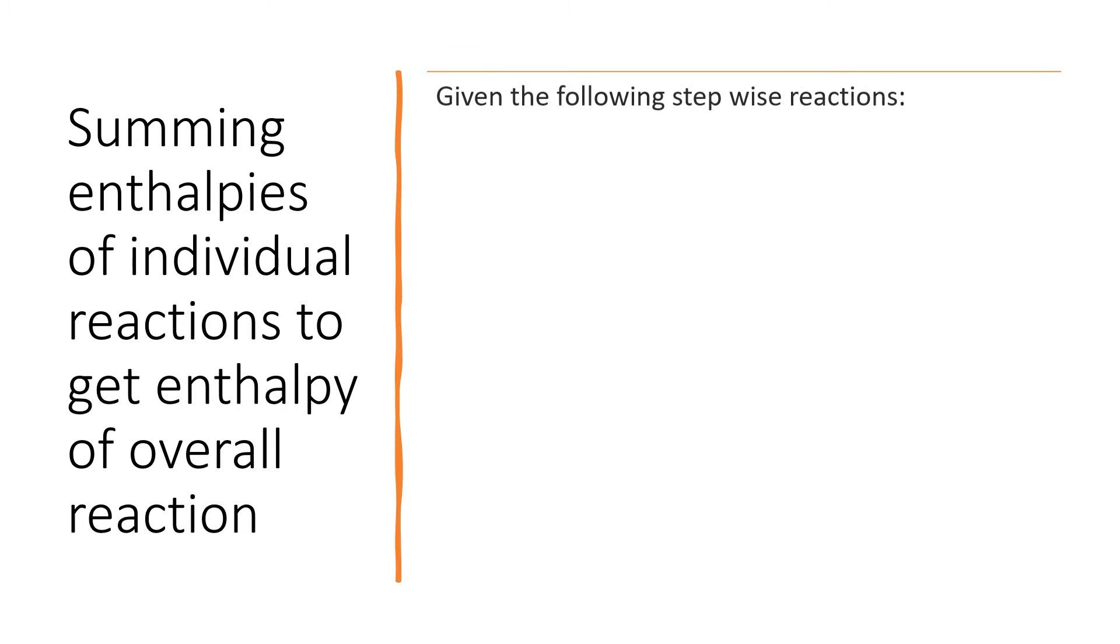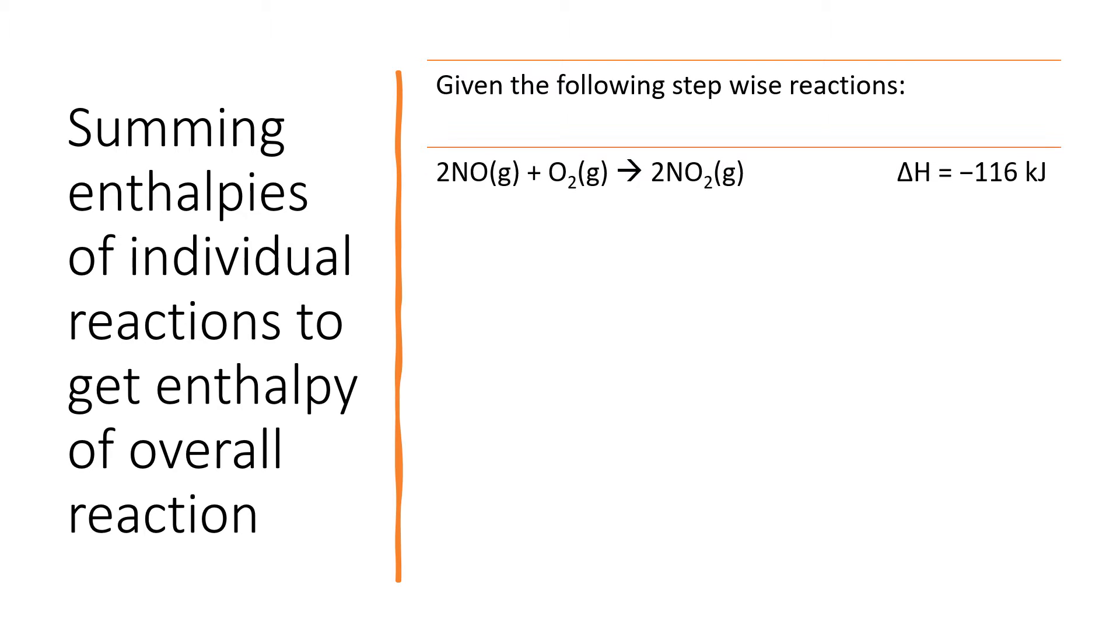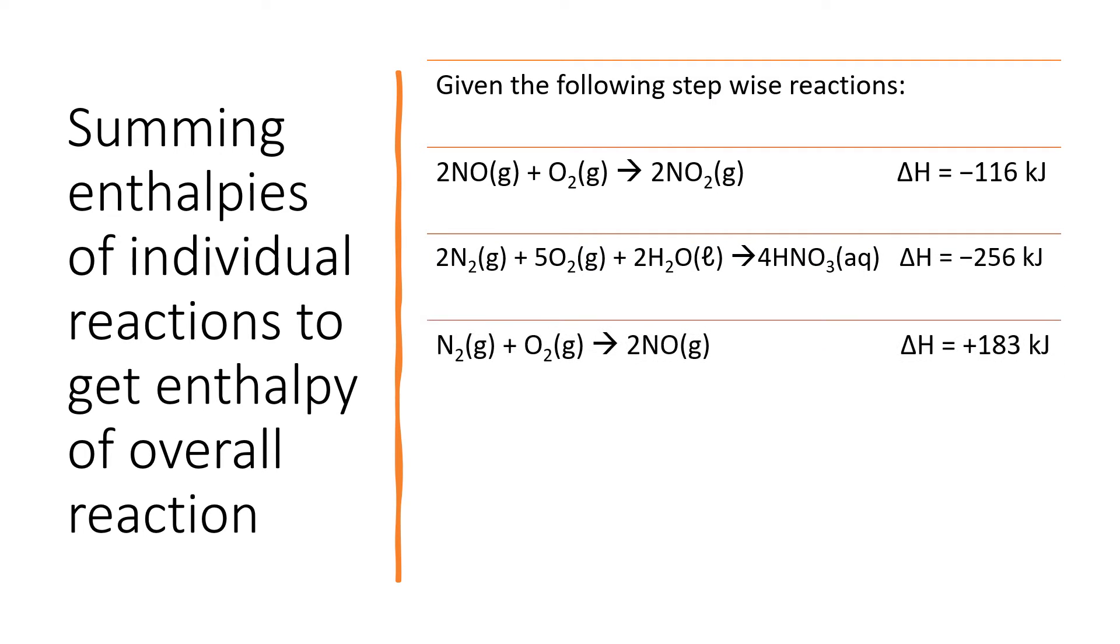Most reactions do not proceed as written. They actually have steps of individual reactions in order to get to the overall final reaction. Here we're going to see three different steps that add up to an overall reaction. The first step is as seen here, the second step, and the third step. I'm not going to talk about all these chemical species, but I will say one important thing.